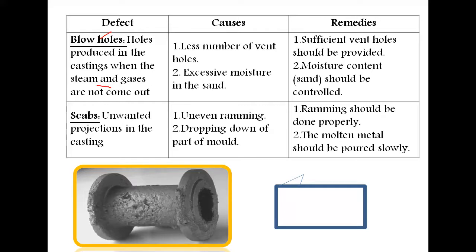Blow holes are holes produced in castings when steam and gases cannot come out — there is no provision, no space for them to escape. This type of hole forms when there are insufficient vent holes, or when excessive moisture is present in the sand. To avoid this, vent holes should be provided on both the cope and drag sides, and moisture content should be controlled.